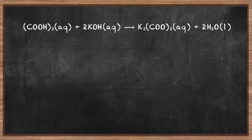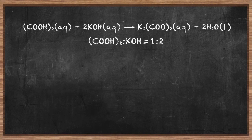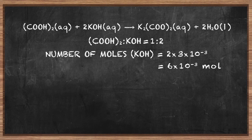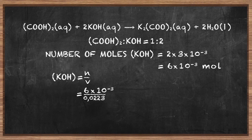Step 3: determine the mole ratio of acid to base. The ratio is 1 to 2 — for each mole of acid, we need two moles of potassium hydroxide. The number of moles of potassium hydroxide which combine with oxalic acid is 6 × 10⁻³. Step 4: calculate the concentration of potassium hydroxide using number of moles divided by volume in cubic decimetres. Substituting the values, the concentration of potassium hydroxide is 0.27 mol per cubic decimetre.